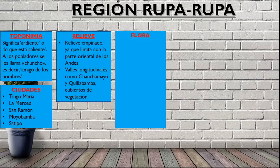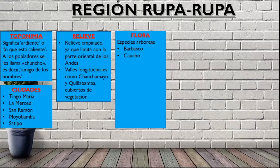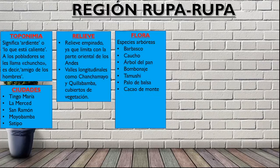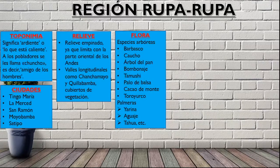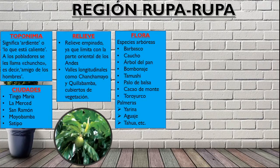¿Cómo es la flora de esta región? Vemos aquí algunas especies arbóreas, es decir, algunos árboles característicos de esta región: el barbasco, el caucho, el árbol del pan, el bombonaje, el tamushi, el palo de balsa, el cacao del monte y el toroyurco. También vamos a encontrar algunos tipos de palmeras, como la palmera del aguaje y la palmera del tawa.